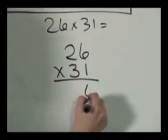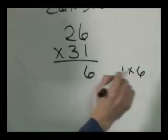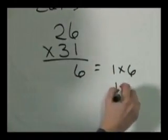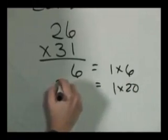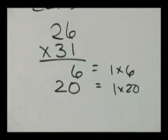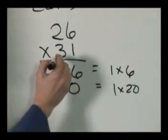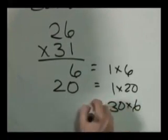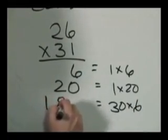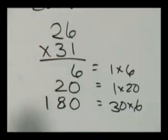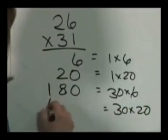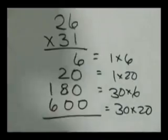But instead we're going to multiply each piece by each piece. I'll show you. One times six is six. Here it is over there. One times two. But it's not a two. It's a twenty. The idea being that this teaches place value better than the standard algorithm. Three times six. But it's not a three. It's a thirty, is one eighty. And three times two. No, but it's thirty times twenty, equals six hundred.